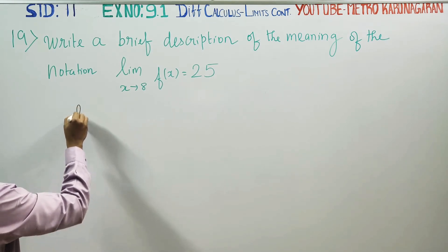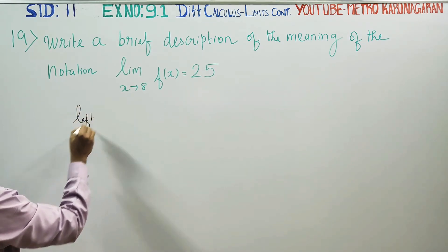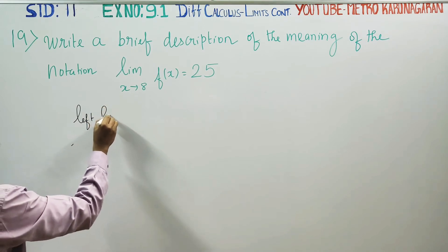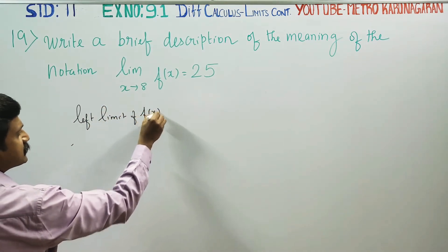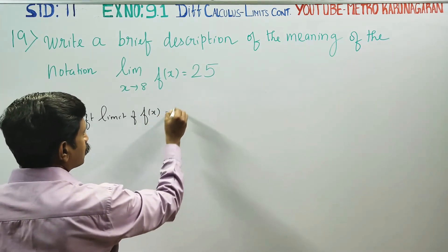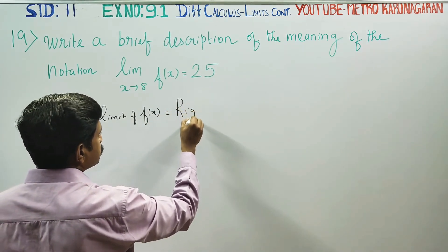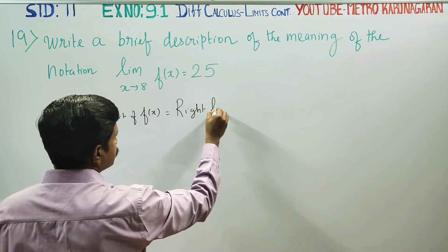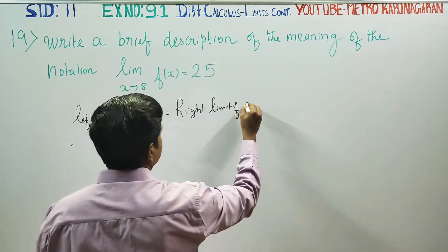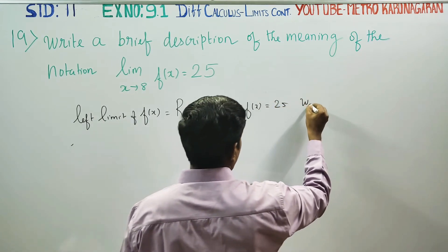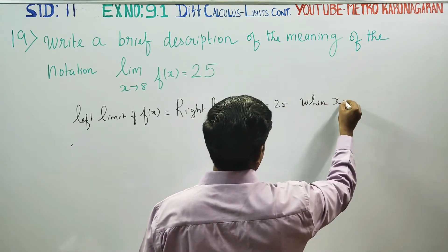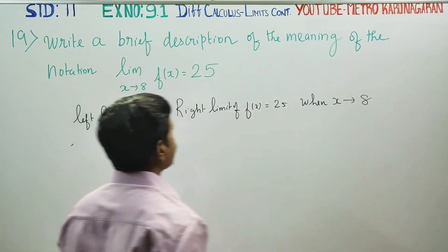Left limit of f of x is equal to right limit of f of x is equal to 25 when x approaches 8.